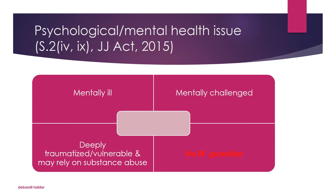These children are very vulnerable towards narcotic drug abuse and can also be considered as coming within the concept of those who are mentally challenged or have psychological issues. There are also children with mental illness, mental retardation, or deep traumatizing issues for whom there may not be any fit guardian to take care of them. The JJ Act 2015 says that whether parents or guardians are considered unfit to care for these children has to be decided by the Child Welfare Committee (CWC), where discretionary power and social inquiry reports play a very significant role.